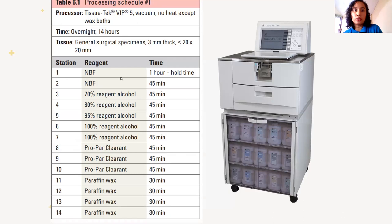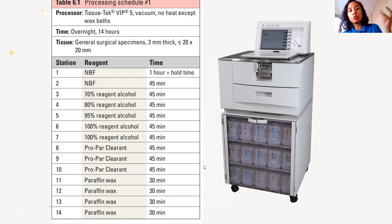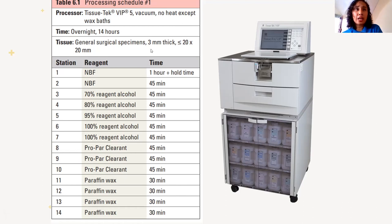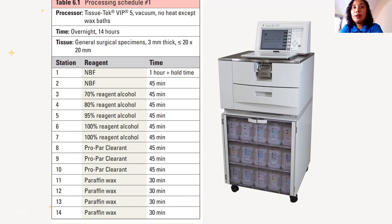In the tissue processor, the sequence is fixation, then dehydration, then clearing, then four changes for infiltration. However, embedding cannot be done inside the tissue processor because it requires a mold, which is done outside. A vacuum is also used to facilitate and increase the speed of processing. Tissue processors usually go only up to infiltration; embedding and staining machines are separate.